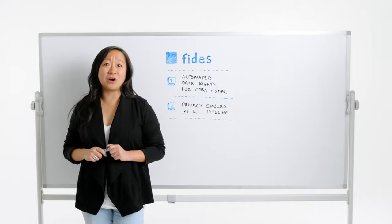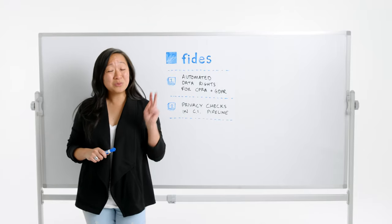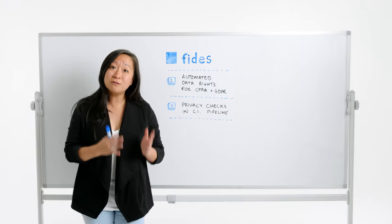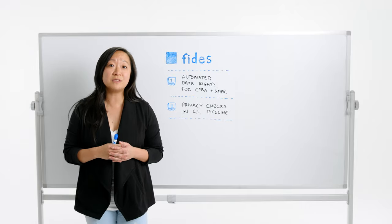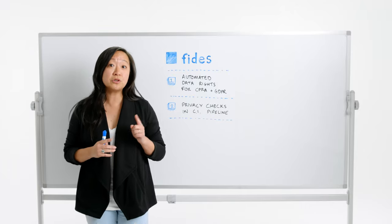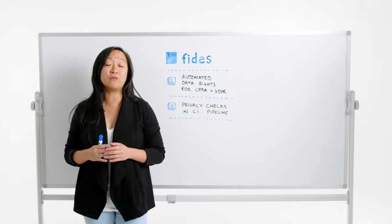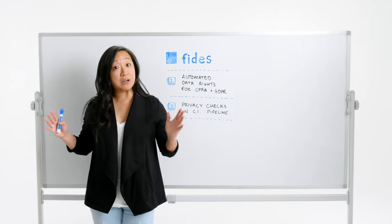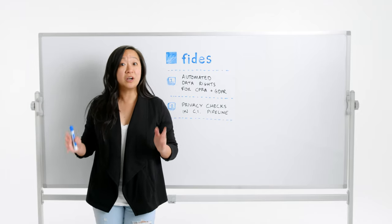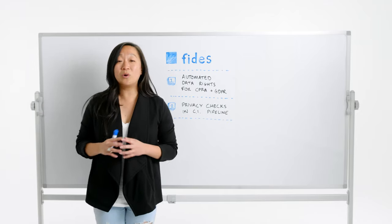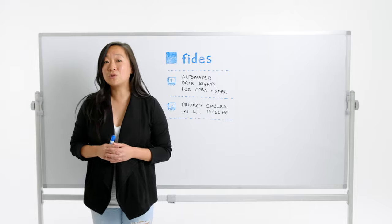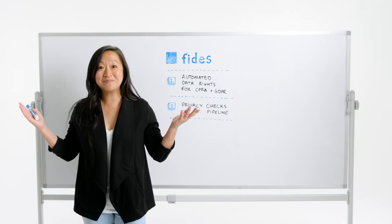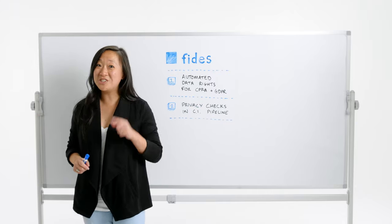So why would you use these products? There's really two answers. In the near term, using FIDAS means that managing data privacy for your users is an easy and embedded part of your already established processes. Zooming out to the bigger picture, you're doing this to build more respectful and trustworthy software for all citizens of the internet. I'd call that a win-win, wouldn't you?